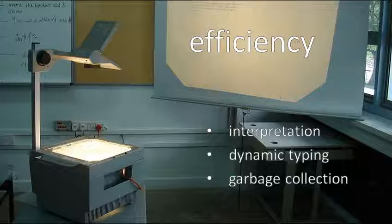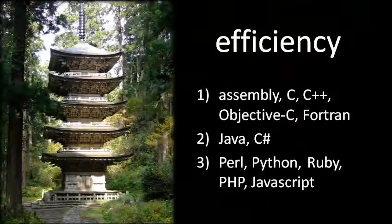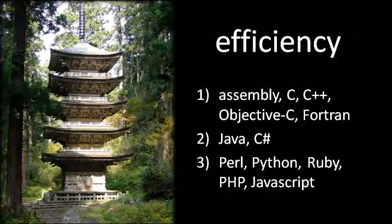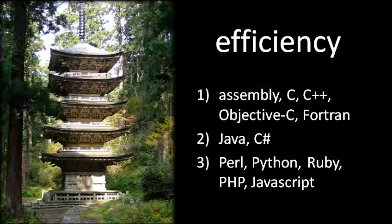So if interpretation, dynamicism, and garbage collection all introduce overhead, this means the slowest languages are going to be languages like Perl, Python, Ruby, PHP, and JavaScript, and the fastest are going to be those like Assembly, C, C++, Objective-C, and Fortran.